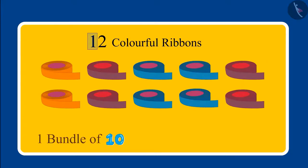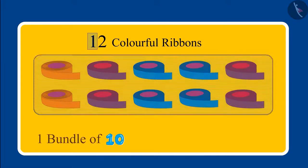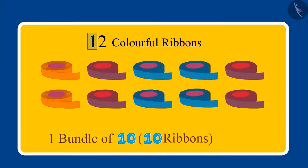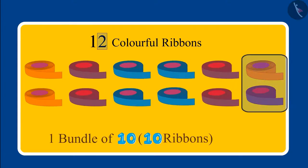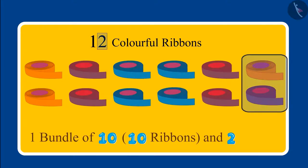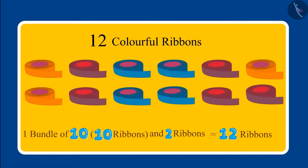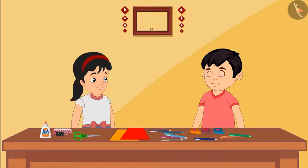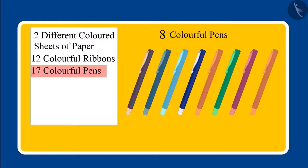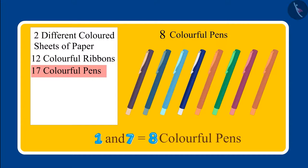Oh no Chotu, you added one and two! We don't read this number like this. Here, one means one bundle of ten — that means ten ribbons — and two means two more ribbons. So in total it becomes twelve ribbons. Understood?